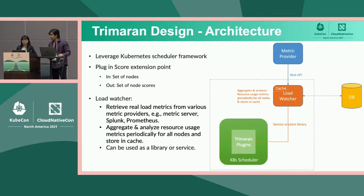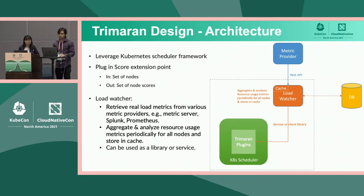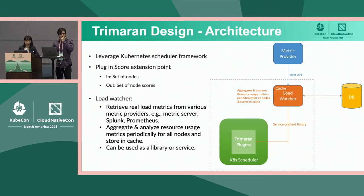Moving on to the design and architecture. Around the time we started working on this problem, the Kubernetes scheduler framework was in Beta API and moving towards stable, so we decided to leverage it to contribute our plugins. The framework provides flexibility to extend the scheduler in different APIs, and Trimoran plugins do so in an extension point called the Scoring Extension Point. There's an upcoming talk by the scheduling folks if you're interested in a scheduling deep dive.